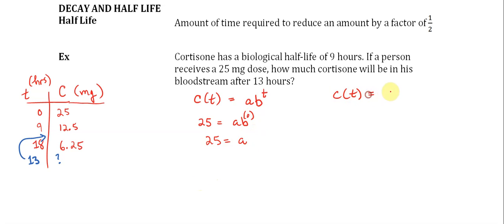We can update our function and say that C(t) is equal to 25 times b to the t power. Then we could use any of these values in the table, 9 and 12.5 or 18 and 6.25. I'm just going to use 9 and 12.5. When the amount of time that's elapsed is 9 hours, there are only 12.5 milligrams of this substance left in the bloodstream. We're going to use this equation and solve for b, our base. Divide both sides by 25 and we get one half is equal to b to the ninth power.